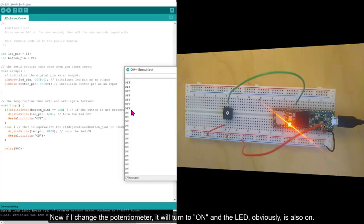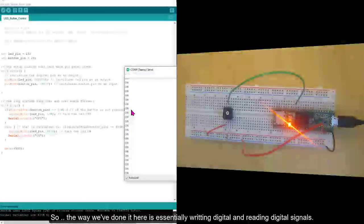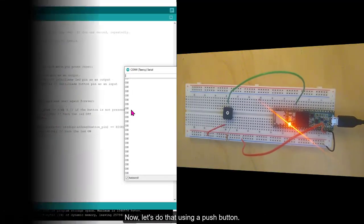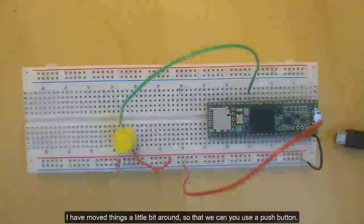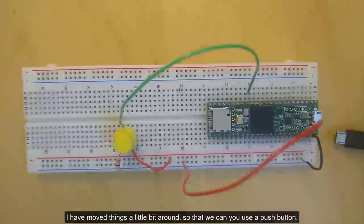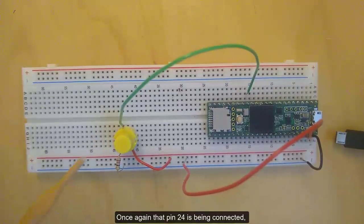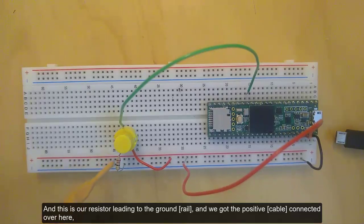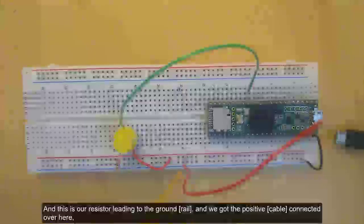So, the way we've done it here is essentially writing digital and reading digital signals. Now, let's do that by using a push button. I have moved things a little bit around, so that we can use a push button. Once again, you see that pin 24 is being connected. And this is our resistor leading to the ground. And get the positive connected over here. Now, what I'm going to do is that I'm going to connect my Teensy again.